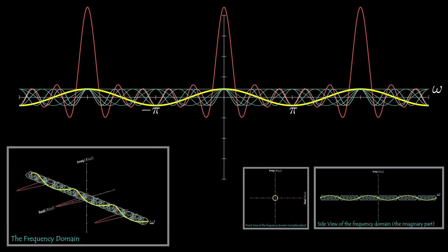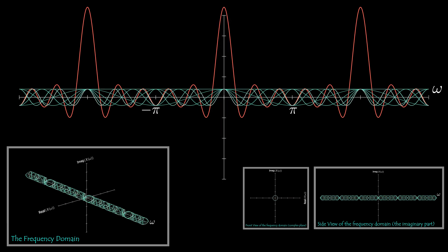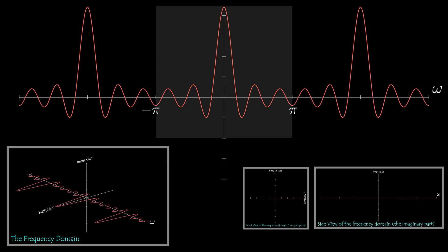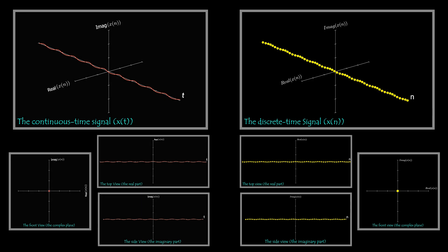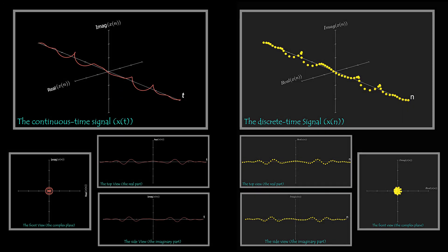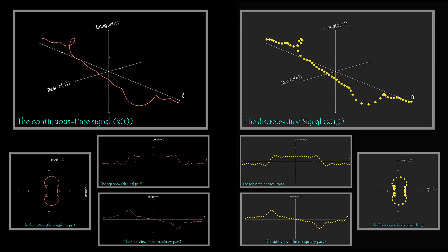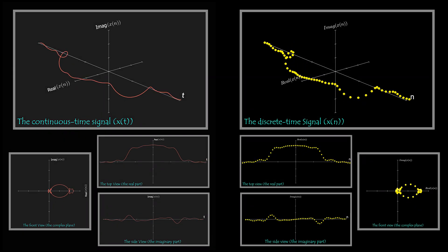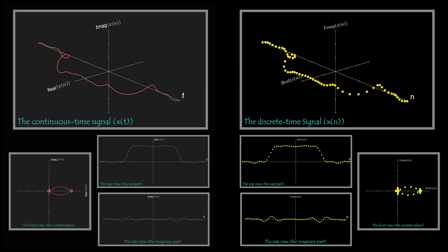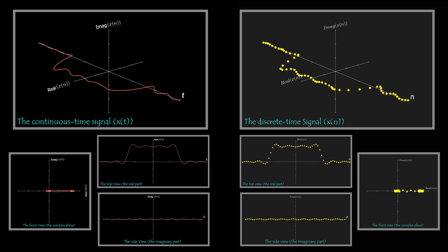From the discrete time Fourier transform, we saw that a discrete time domain signal has a periodic frequency domain, and we saw visually why this is true. Since each continuous time domain signal is a linear combination of continuous complex exponentials, then each discrete time signal is a linear combination of discrete complex exponential signals. The continuous time rectangular function is a linear combination of continuous time complex exponentials, and the discrete time rectangular function is a linear combination of discrete time complex exponentials.